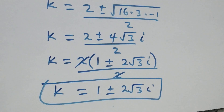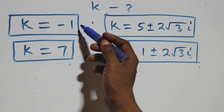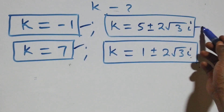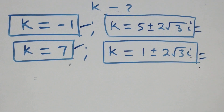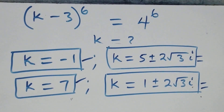Therefore all together we have 6 solutions in this given problem: 2 real solutions and 2 complex solutions from each case, giving 4 complex solutions total. Thank you for watching — don't forget to subscribe for more videos, turn on the notification bell, share this video, give it a thumbs up, and put your comments. See you next class, bye for now.